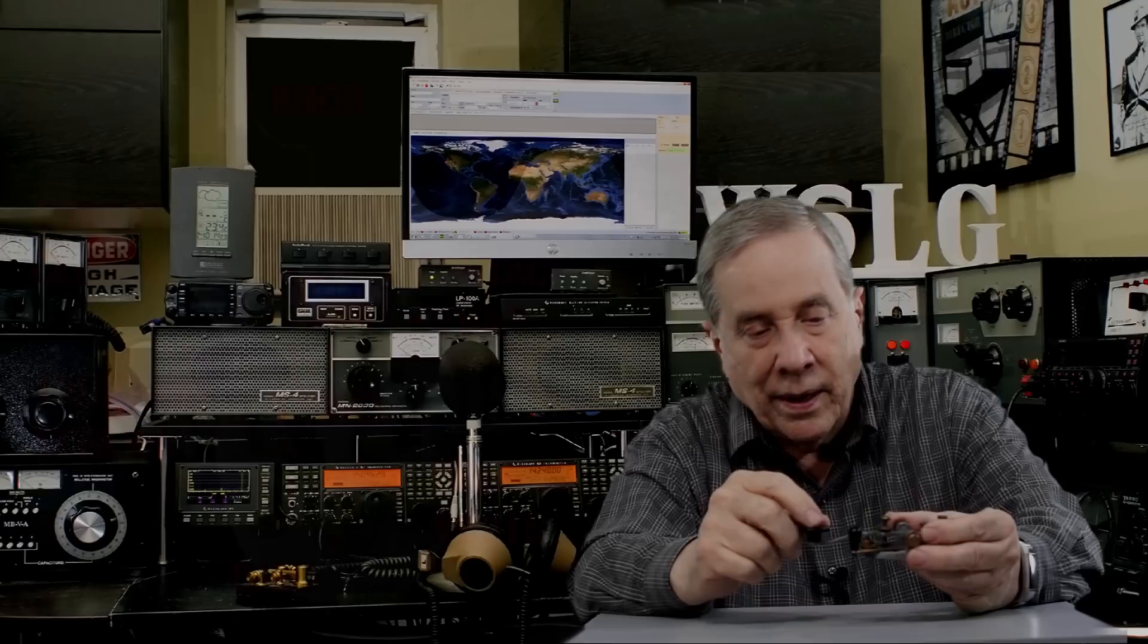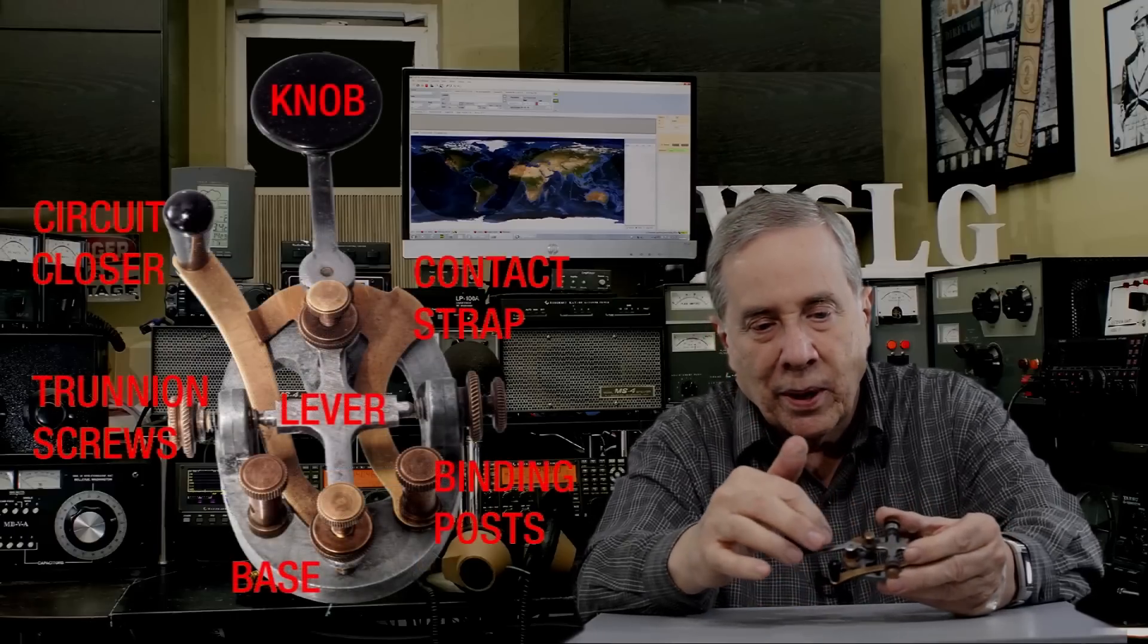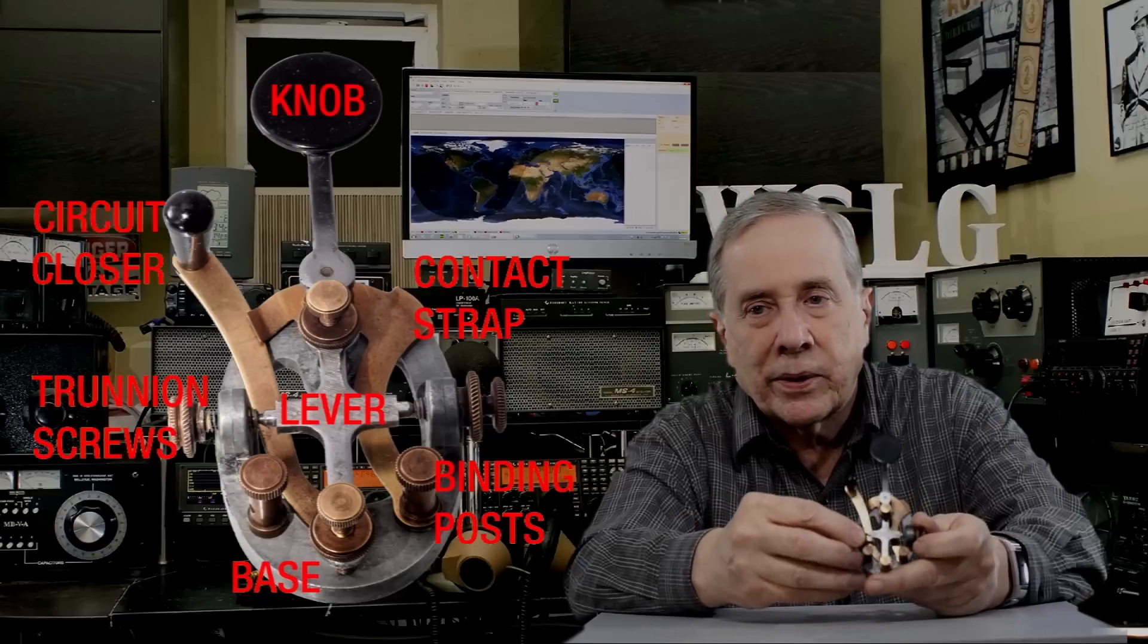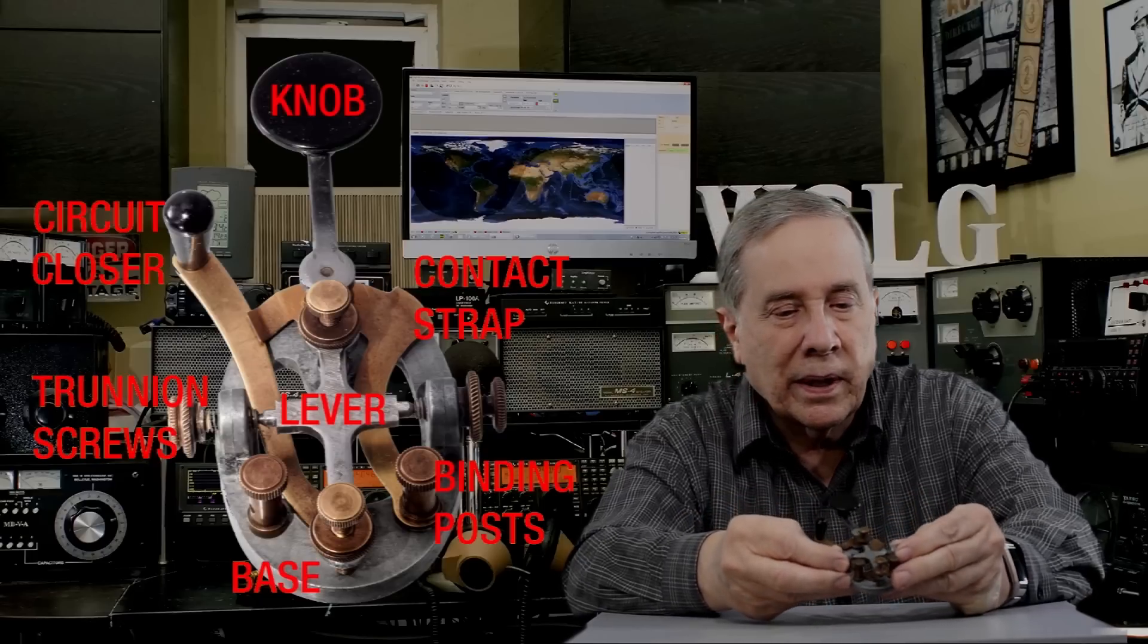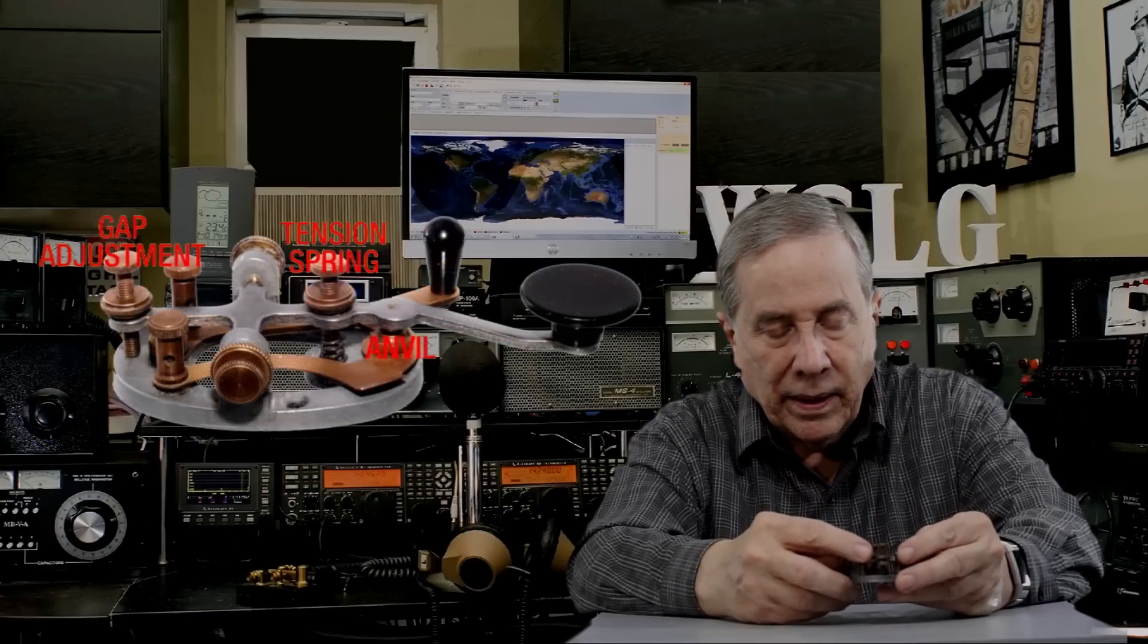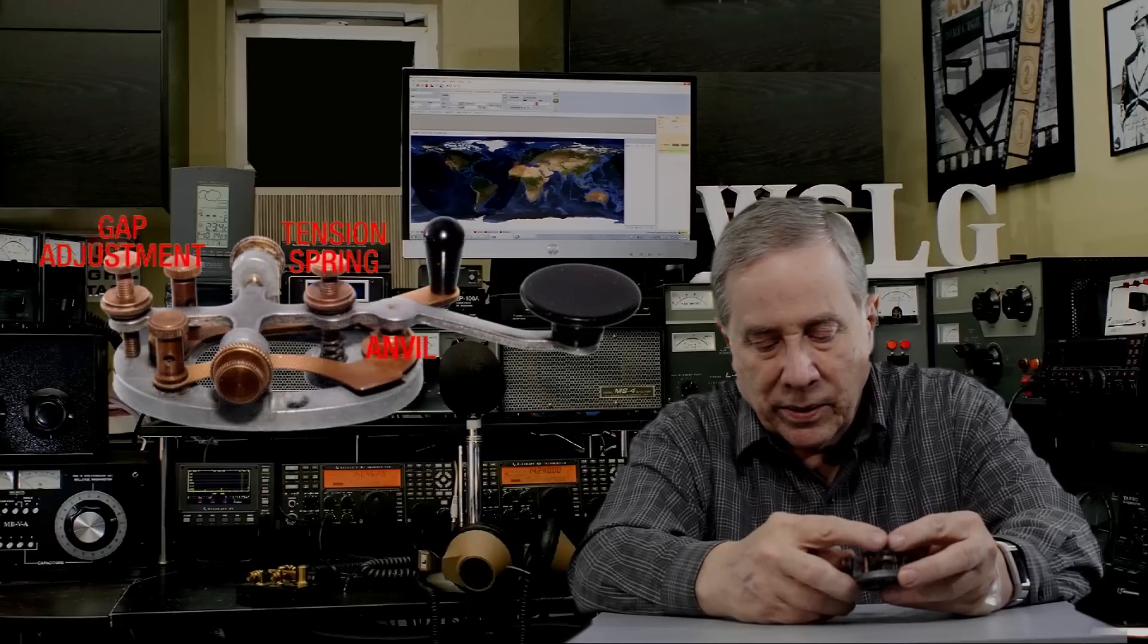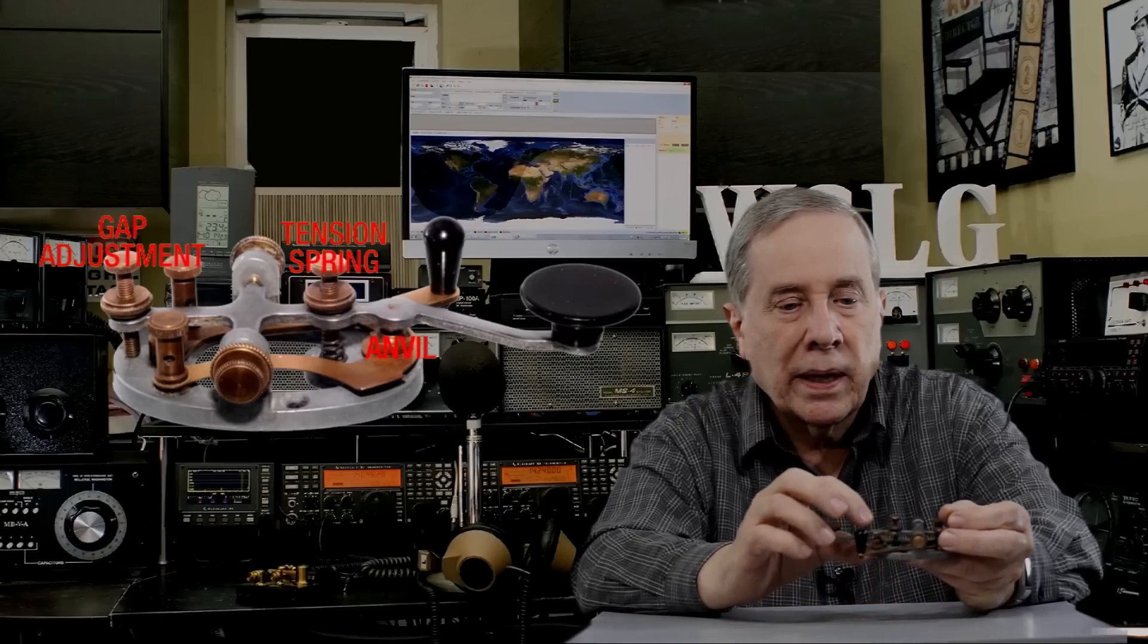It's a beautiful design. The parts of this key are the knob, and this is a thing called the circuit closer. The lever is the bar down the middle. Joint-in screws are on each side to adjust the lever so that the contacts line up. These are binding posts or contact posts, and this is the screw to adjust the gap between the contacts. There's an upper contact and a lower contact. Lower contact sits on an anvil.